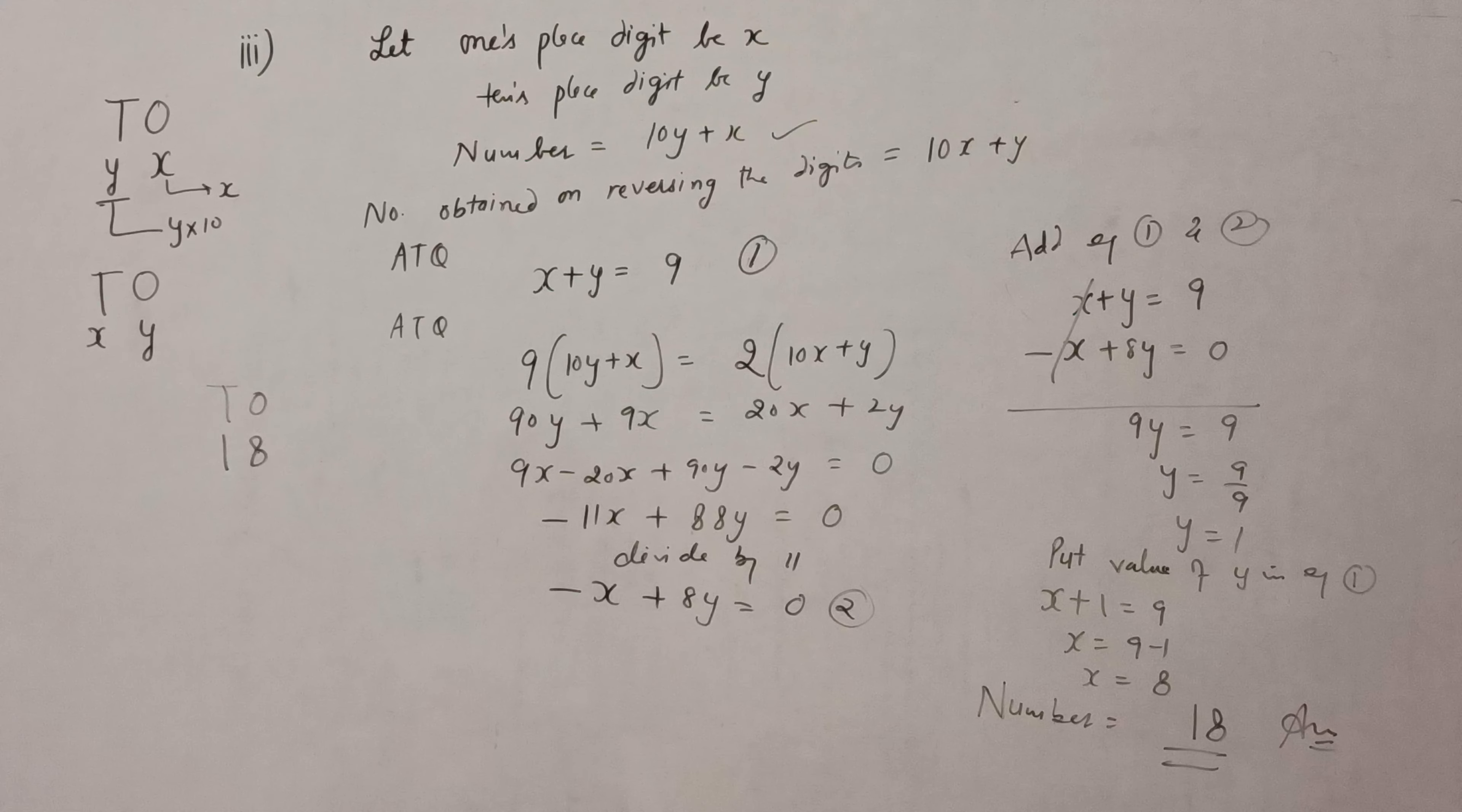Now according to the question, it is given the sum of the digits, meaning x plus y is equal to 9. This is the first equation. And second is 9 times this number, 9 times of this number is twice the number obtained by reversing the digits.